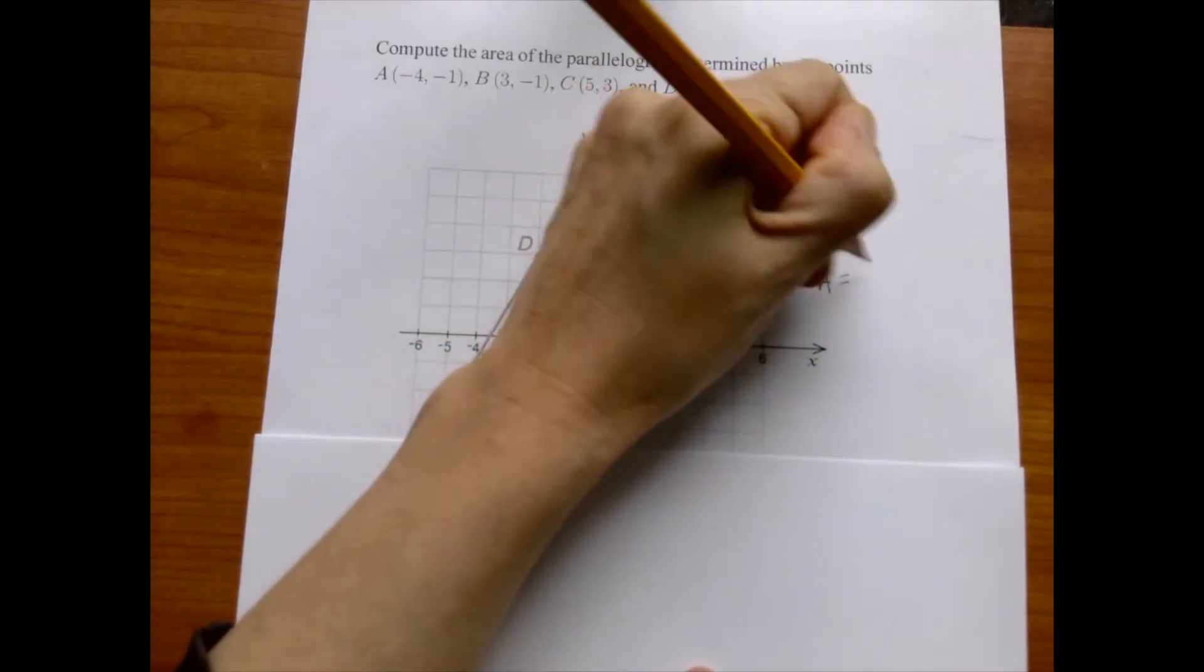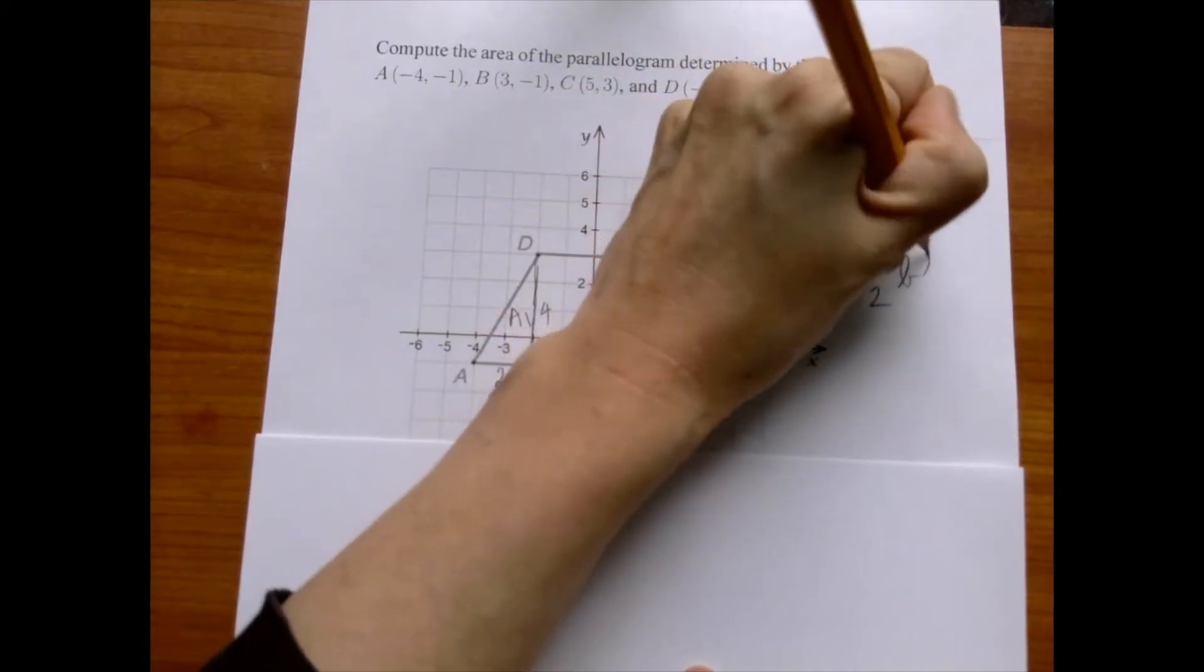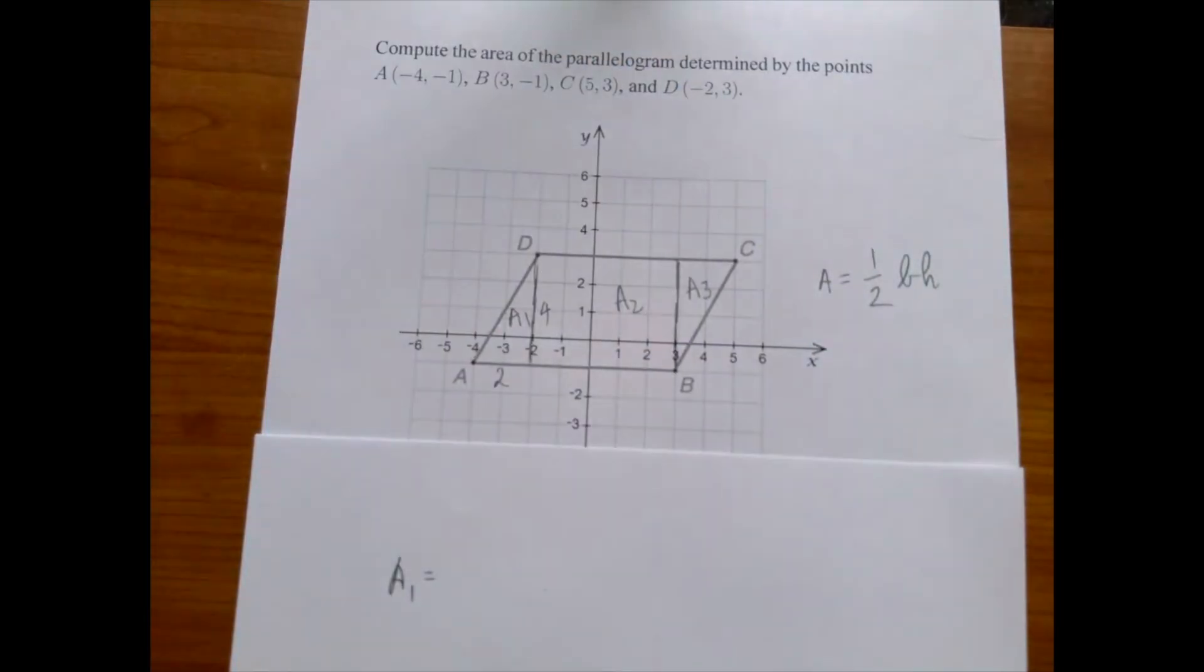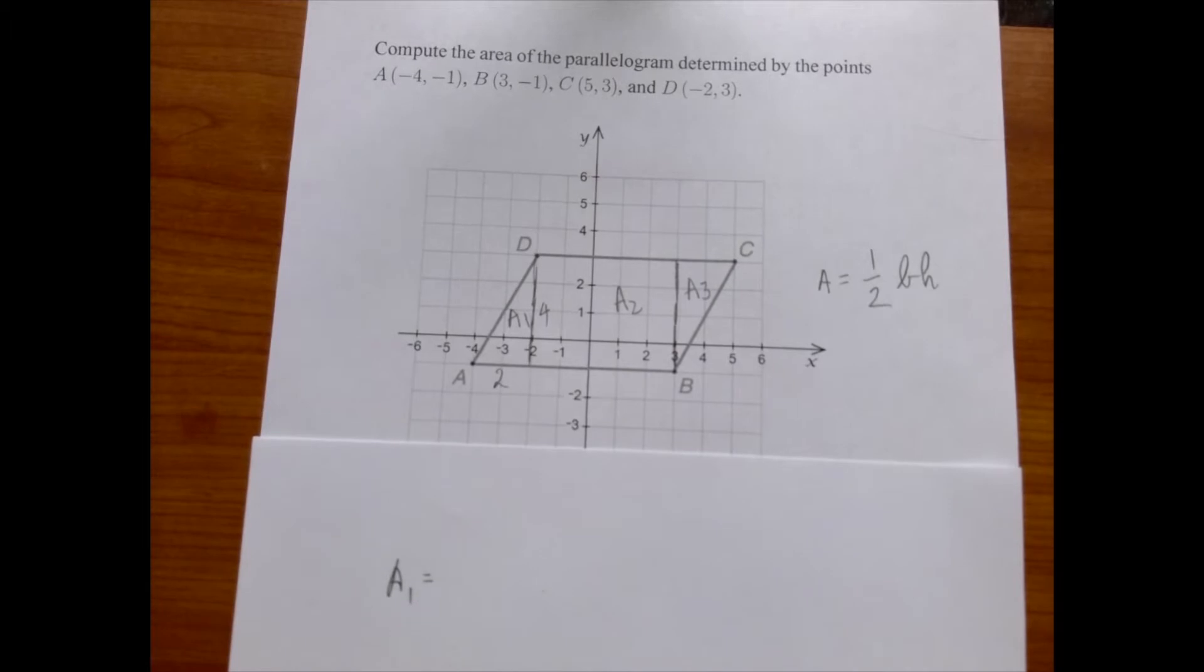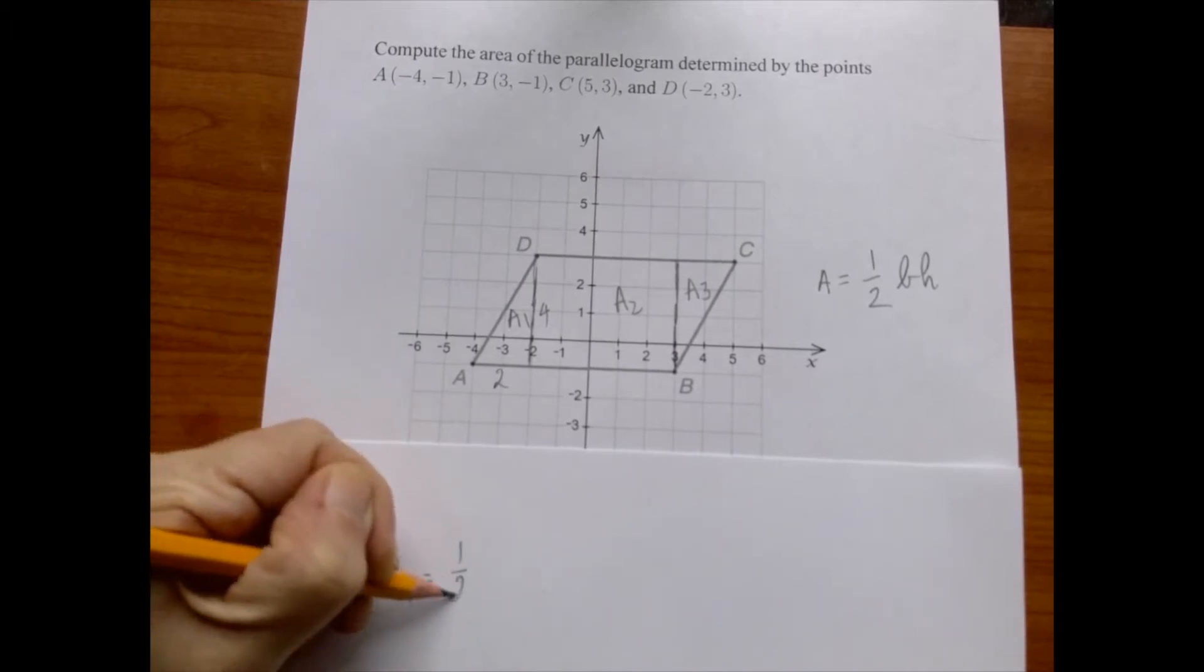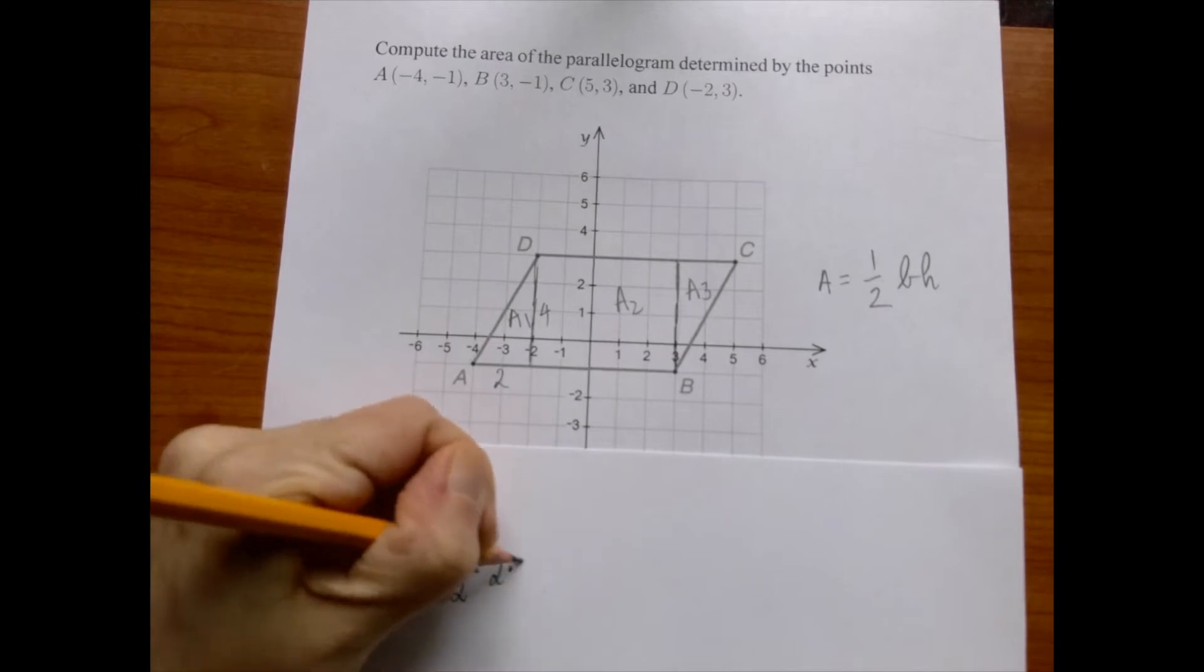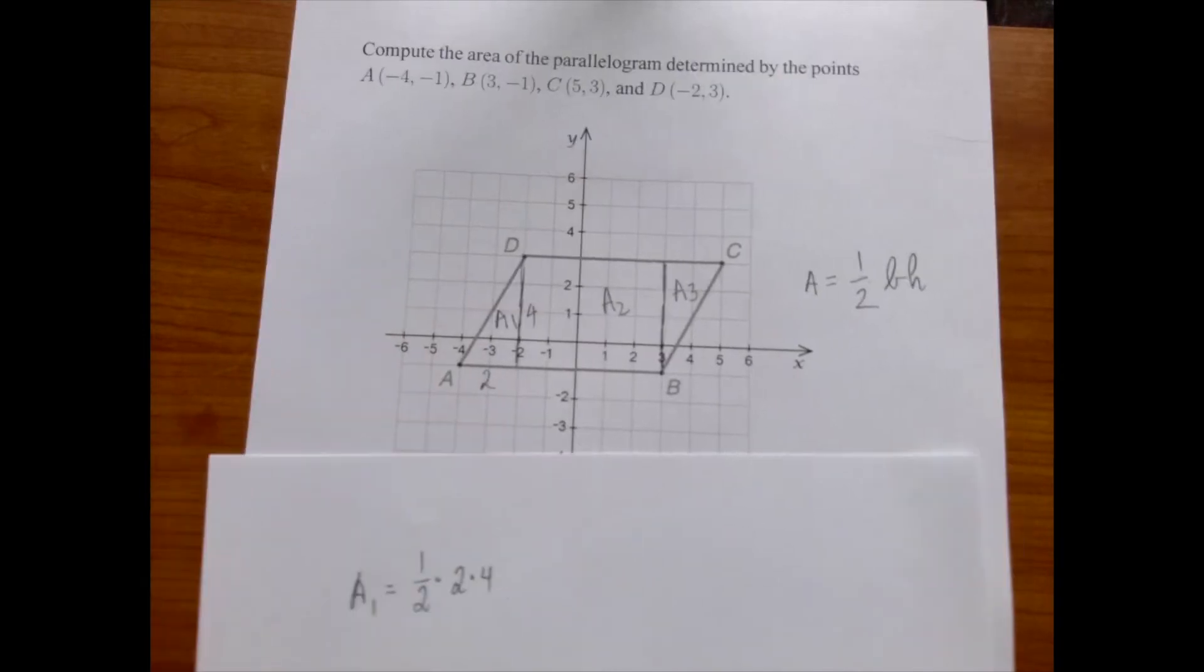In case of a right triangle, if one side is, one shorter side is the base, the other shorter side is the height. So we're going to have one-half times two times four, which is four.